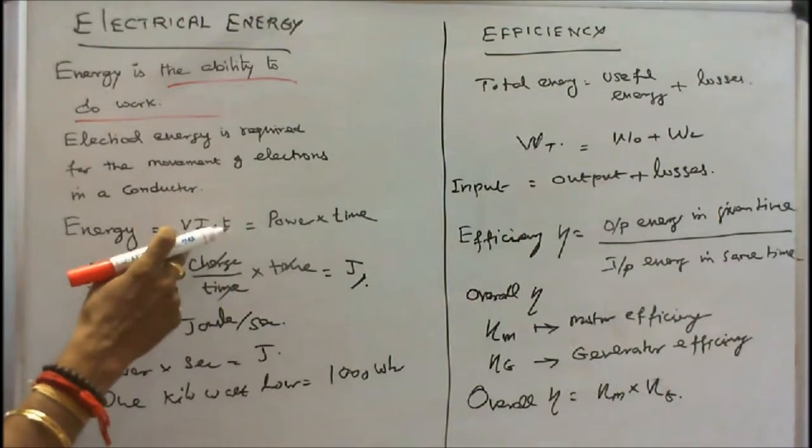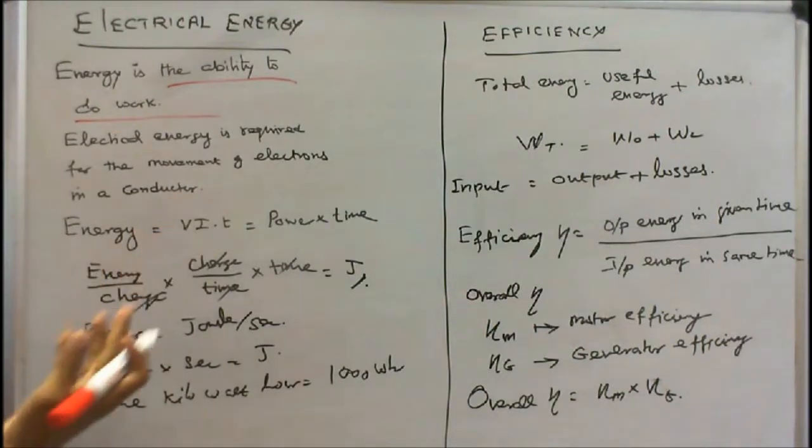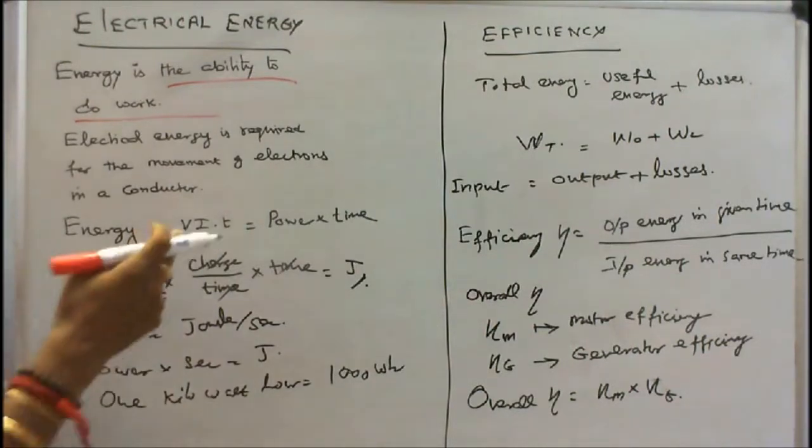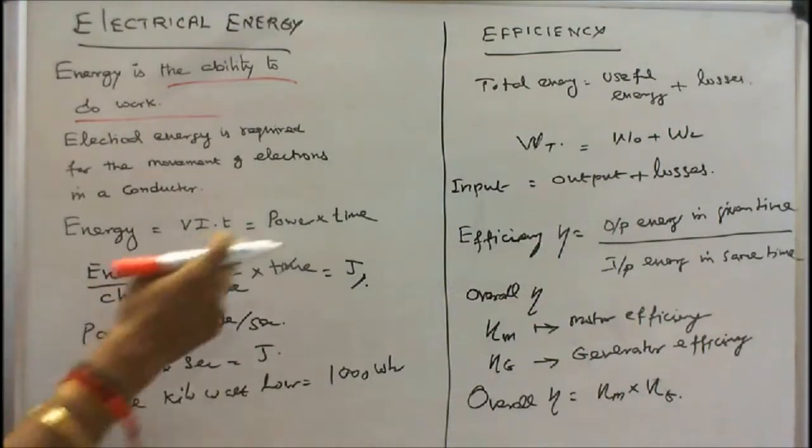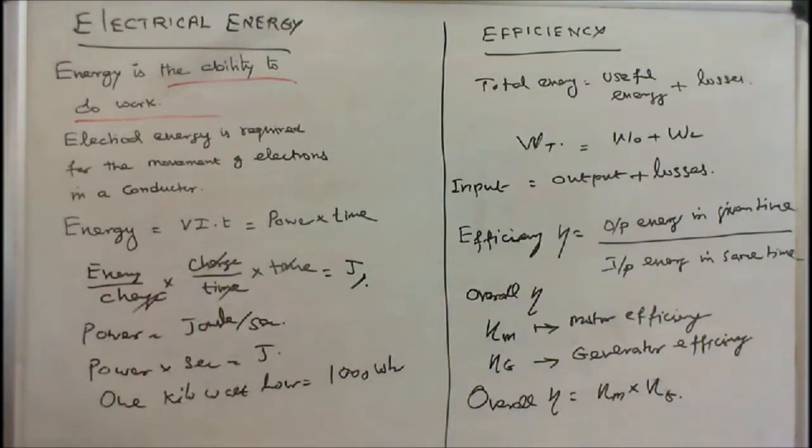Simply V - we know that voltage is energy by charge, I is charge by time, into time. We will get joules. Power is equal to joules per second, so power into seconds equals joules. In commercial use we use 1 kilowatt-hour. We are paying electricity bill for kilowatt-hour - 1 unit, 1 kilowatt-hour is 1 unit or 1000 watt-hour.